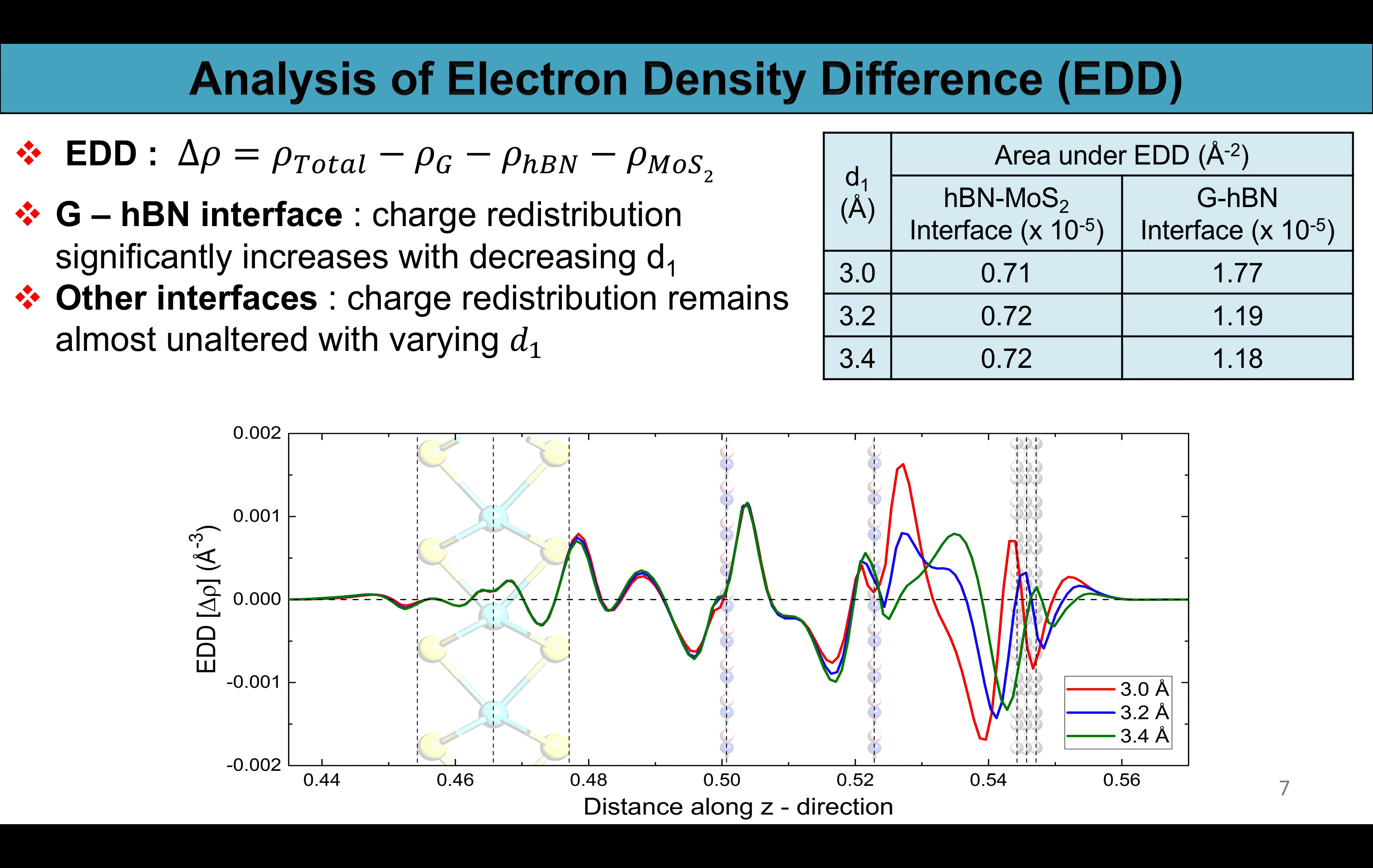To gain more insight regarding the interlayer charge transfer at the atomic level we have calculated the electron density difference. Clearly from the plot and the numeric values of the area under EDD, the charge redistribution is more pronounced at the graphene-hBN interface rather than hBN-hBN or hBN-MoS2 interfaces.